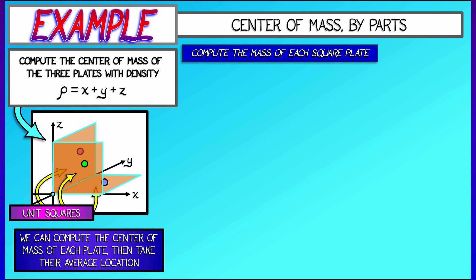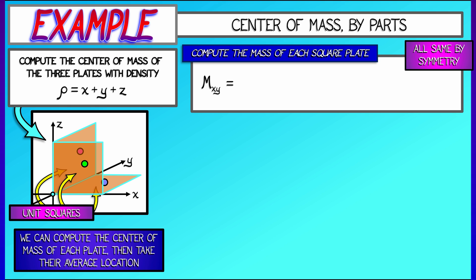Let's begin by computing the mass of each square plate. They're all the same by symmetry. Let's take the xy-plane and look at the mass of that unit square in there. That is the integral as x and y go from zero to one of the density of x plus y plus z.